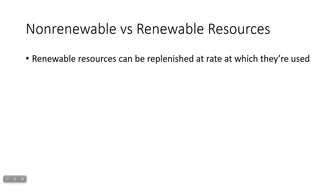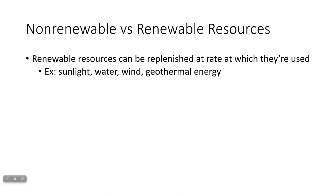So let's talk about non-renewable and renewable resources and the difference between them. Renewable resources are defined as those that can be replenished at the rate at which they're used. If it's a resource we use very slowly, it can be replenished very slowly. If it's a resource we use rapidly, it needs to be replenished rapidly. Most resources that don't replenish within human lifetimes are not considered renewable. Some examples are sunlight, water, wind, geothermal energy, and biomass — these can be renewable.